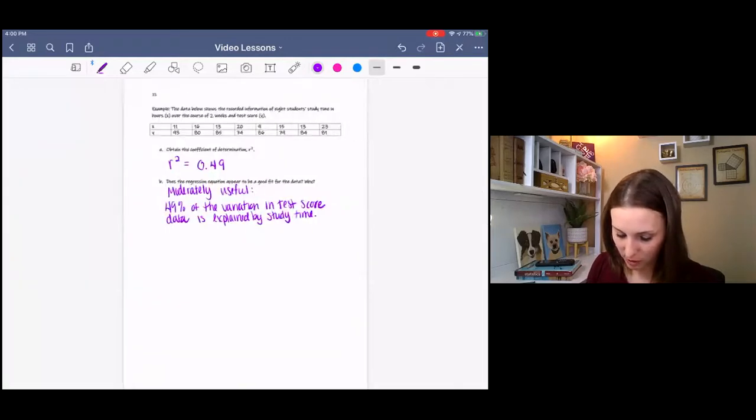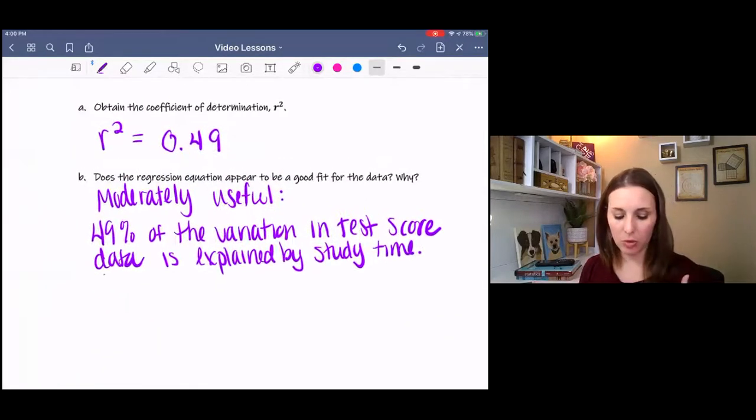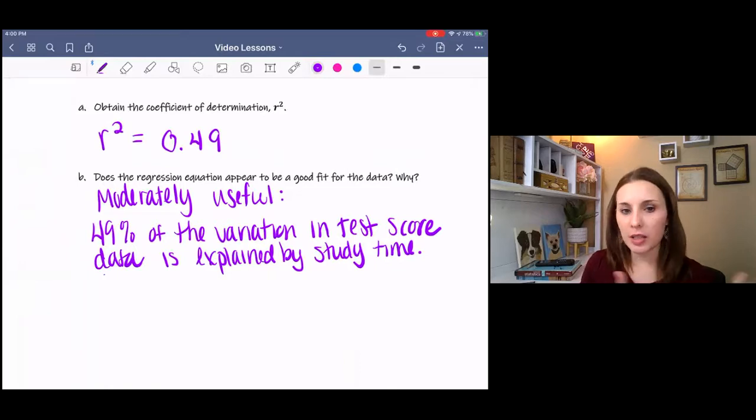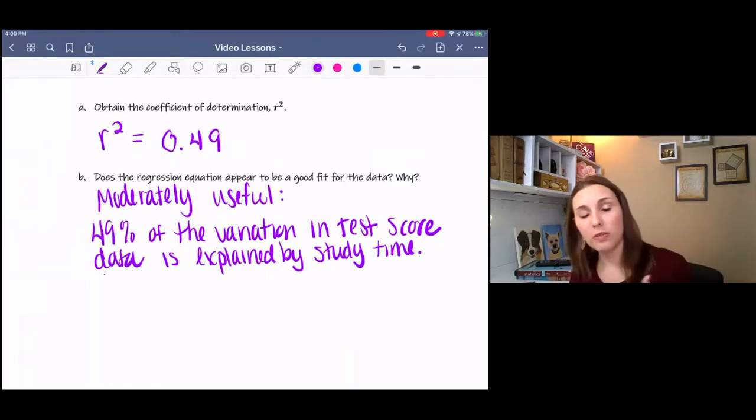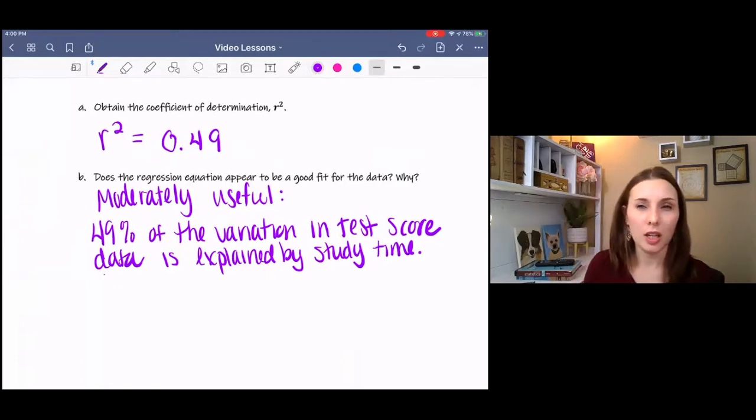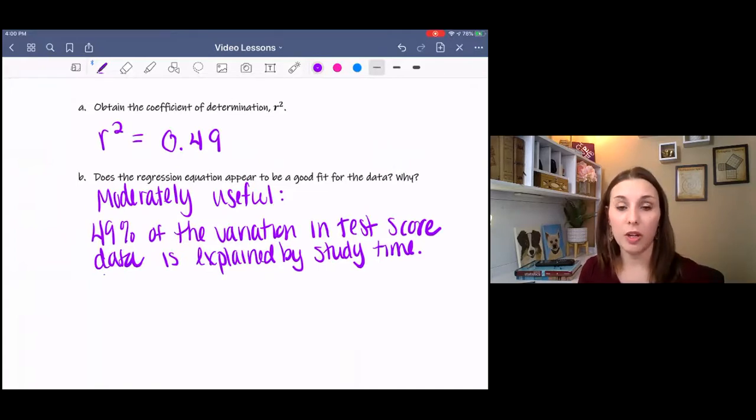So that's how you explain that. If you got something less than about 50%, it's not so useful or not so good a fit. And then if you got larger than 50%, like 60% is still probably moderate. But then if you get into the 80s, 90s, that's very useful.